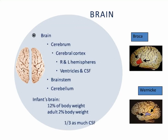It's important to remember that the brain has the cerebrum, the cerebral cortex, the right and left hemispheres, ventricles, and cerebrospinal fluid. We also have the brain stem and the cerebellum. Interestingly, the infant's brain is about 12% of their body weight, while in an adult it's only about 2%. An infant also has about one-third as much cerebrospinal fluid as an adult.